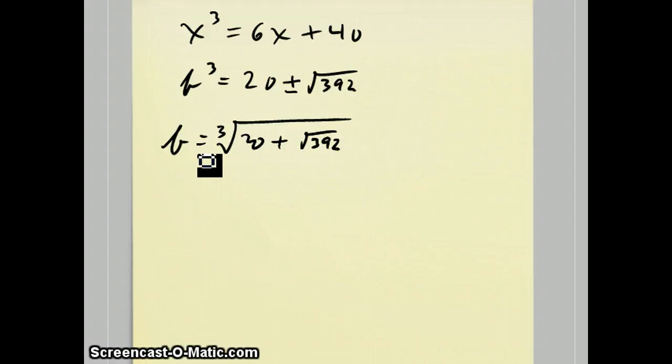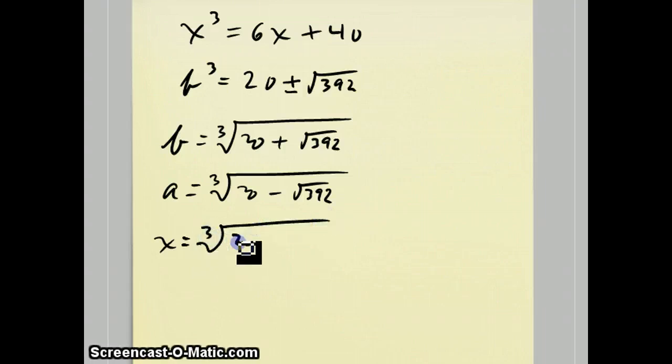It turns out that if I plug that into one of the other equations to solve for a, a actually ends up being the other answer, which is the cube root of 20 minus the square root of 392.